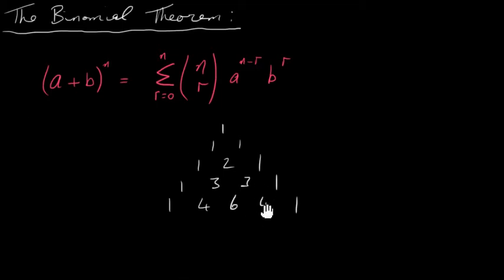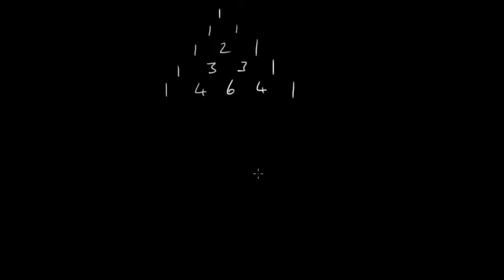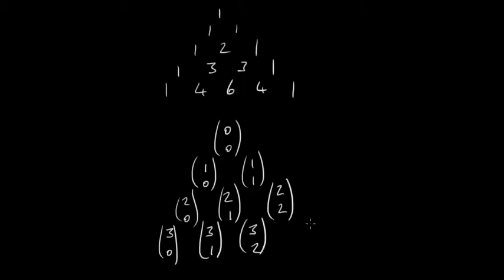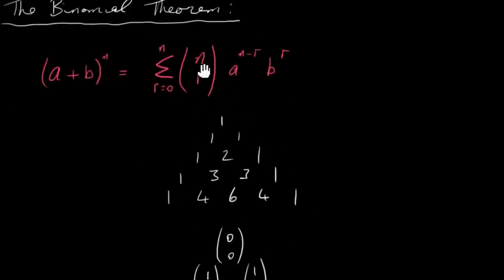Now, in this particular case, we're not going to use Pascal's triangle directly. What we're going to use is our choosing notation. So instead of 1, we're going to use 0 choose 0, which is effectively 1. We're going to use 1 choose 0, 1 choose 1 — that's this row here. We're going to use 2 choose 0, 2 choose 1, 2 choose 2, which gives us 1, 2, 1. We're going to use 3 choose 0, 3 choose 1, 3 choose 2, 3 choose 3, which gives us 1, 3, 3, 1, and so on. So this is the part of our formula we're using, and we add everything up — this symbol just means adding up our different terms.